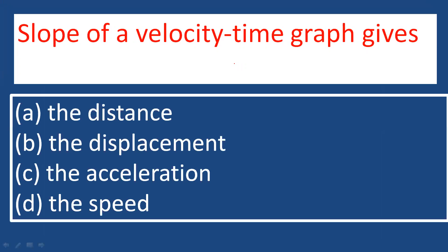The slope of a velocity-time graph gives you acceleration, and the area under the velocity-time graph gives displacement.